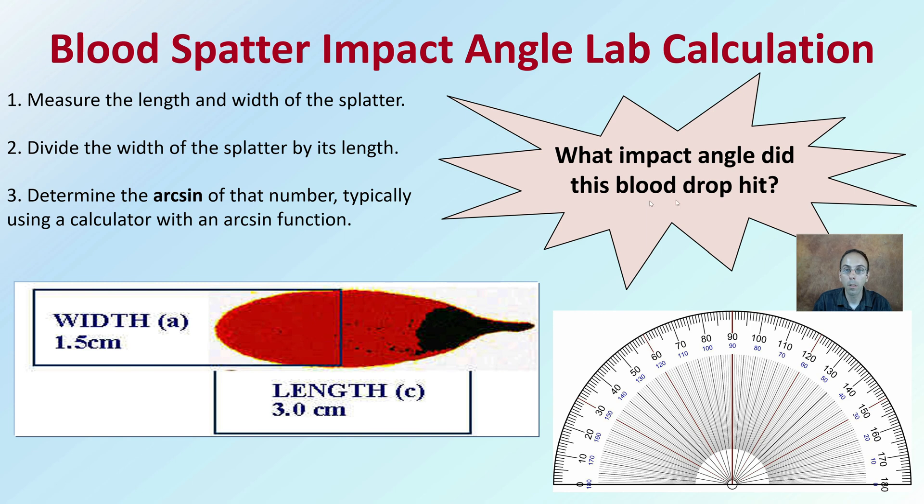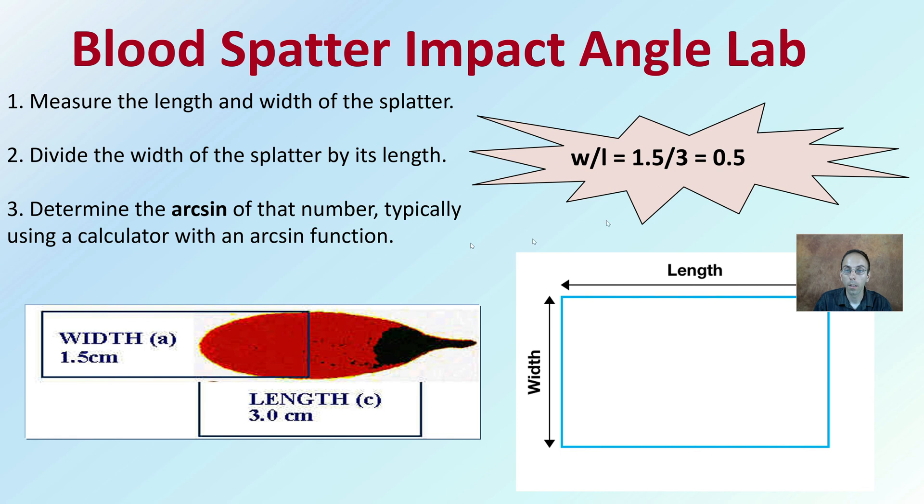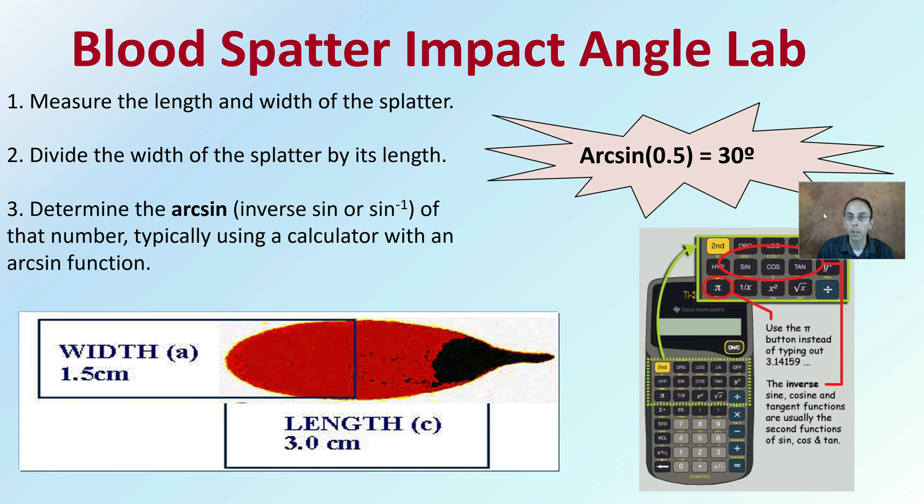Taking those same steps, what impact angle did this blood droplet hit? This blood droplet is the one here. I've measured it for you. The width being 1.5 centimeters and the length being 3 centimeters. How do you calculate this? It would be the width divided by the length, and you get that to be 0.5. Then you take the arc sine of that, and you're going to get it to be 30 degrees. So this impacted at a 30 degree angle. If you're wondering where the arc sine is on your calculator, sometimes it's the second function you need to utilize. Learn your particular calculator and use this as an example to make sure you can get the same number.